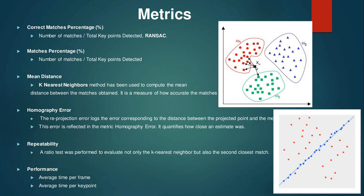We measure the K-nearest neighbors of one particular centered keypoint in one image to see how accurate the matches are. Homography error is a crucial metric — the reprojection error measures the distance between the projected point and the measured point. This error is reflected in the homography error metric, which quantifies how close an estimate was.